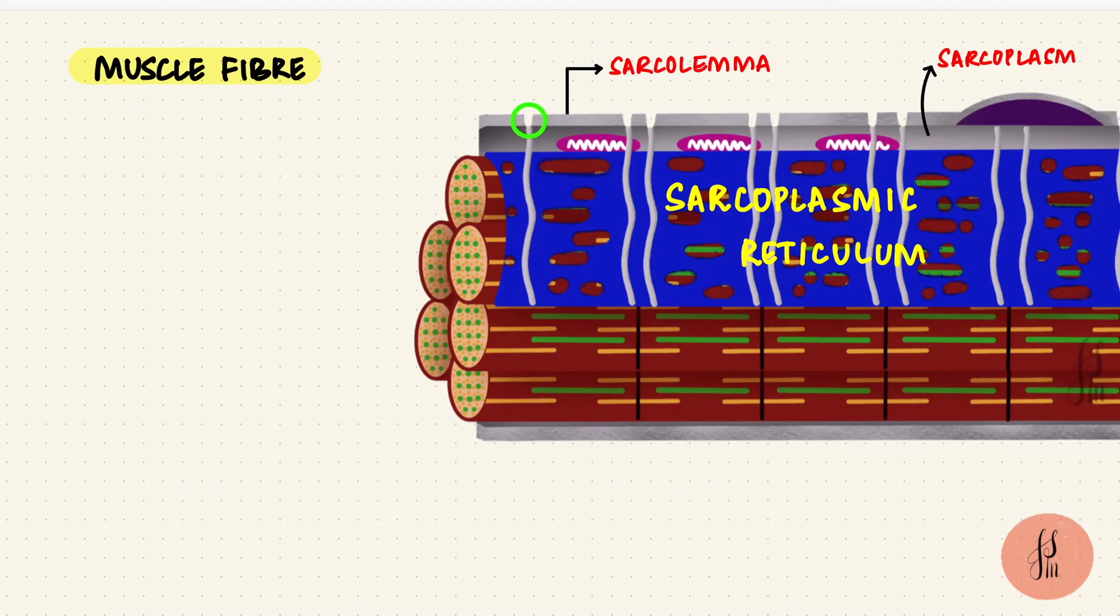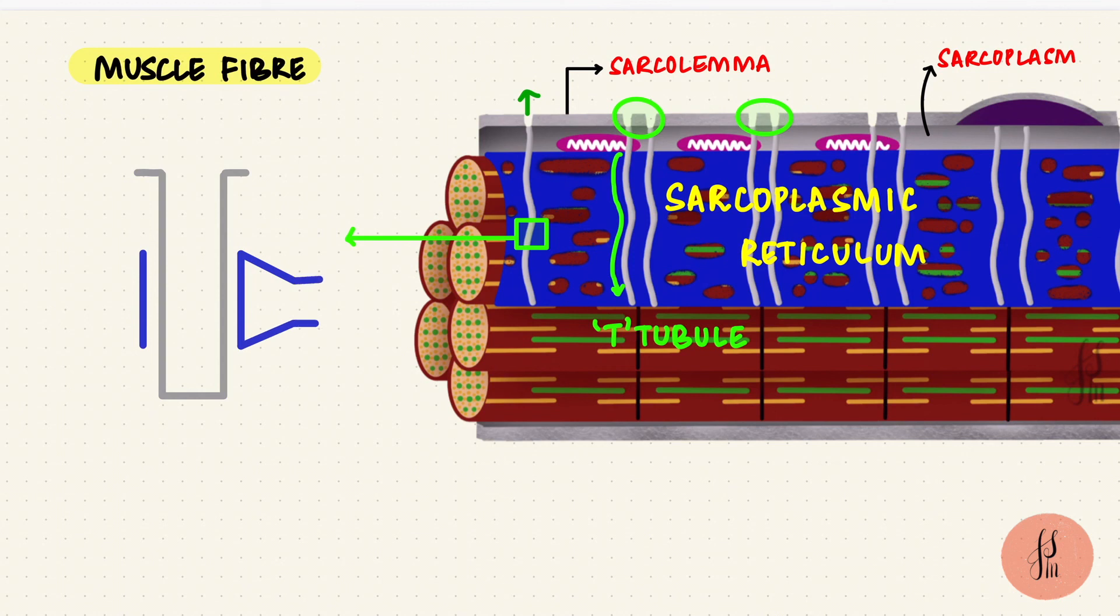From the sarcolemma, the membrane dips down into the cell, forming a transverse T-tubule. So this tubule is open to the outside, which is the extracellular space, and the T-tubule is associated with the sarcoplasmic reticulum on either side. So if we take a region here, it will be like one T-tubule with the sarcoplasmic reticulum on either side, but these are actually the terminal cisterns of the sarcoplasmic reticulum. And these three together, they form a triad.